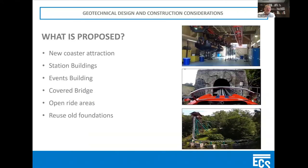Once we know we're building a new coaster attraction, there's always a station building that loads and unloads visitors, an events building — which we'll discuss in more detail because it was so complex — a covered bridge, and open ride track areas where you're just out in the open. The interesting and unique thing about this particular coaster is we reused a lot of the old foundations from the old Big Bad Wolf roller coaster.